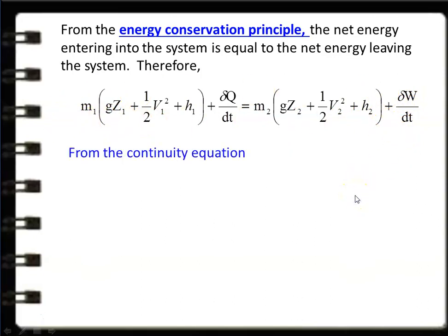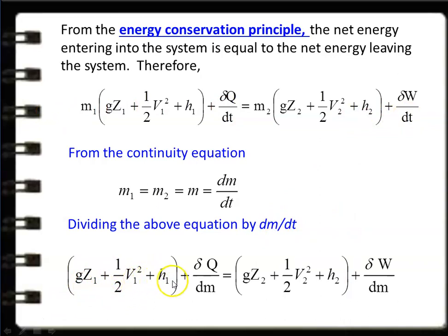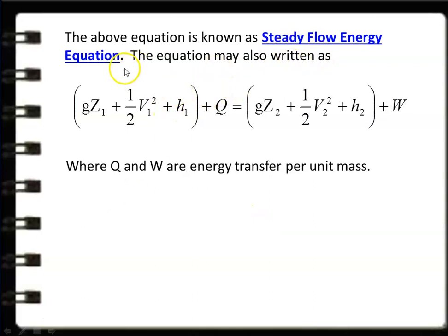From the continuity equation, M1 = M2 = M = dM/dt. Dividing the SFEE by dM/dt gives: g·Z1 + ½·V1² + H1 + dQ/dM = g·Z2 + ½·V2² + H2 + dW/dM, where dQ/dM is heat transfer per unit mass and dW/dM is work done per unit mass. This can also be written as: g·Z1 + ½·V1² + H1 + Q = g·Z2 + ½·V2² + H2 + W, where Q and W are energy transfer per unit mass. This is the steady flow energy equation to remember and use for solving problems.